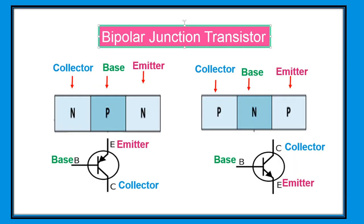Bipolar Transistor is a semiconductor device commonly used for amplification. This device can amplify digital or analog signals. The word transistor is a combination of two words — transfer and varistor — used to describe the mode of operations.